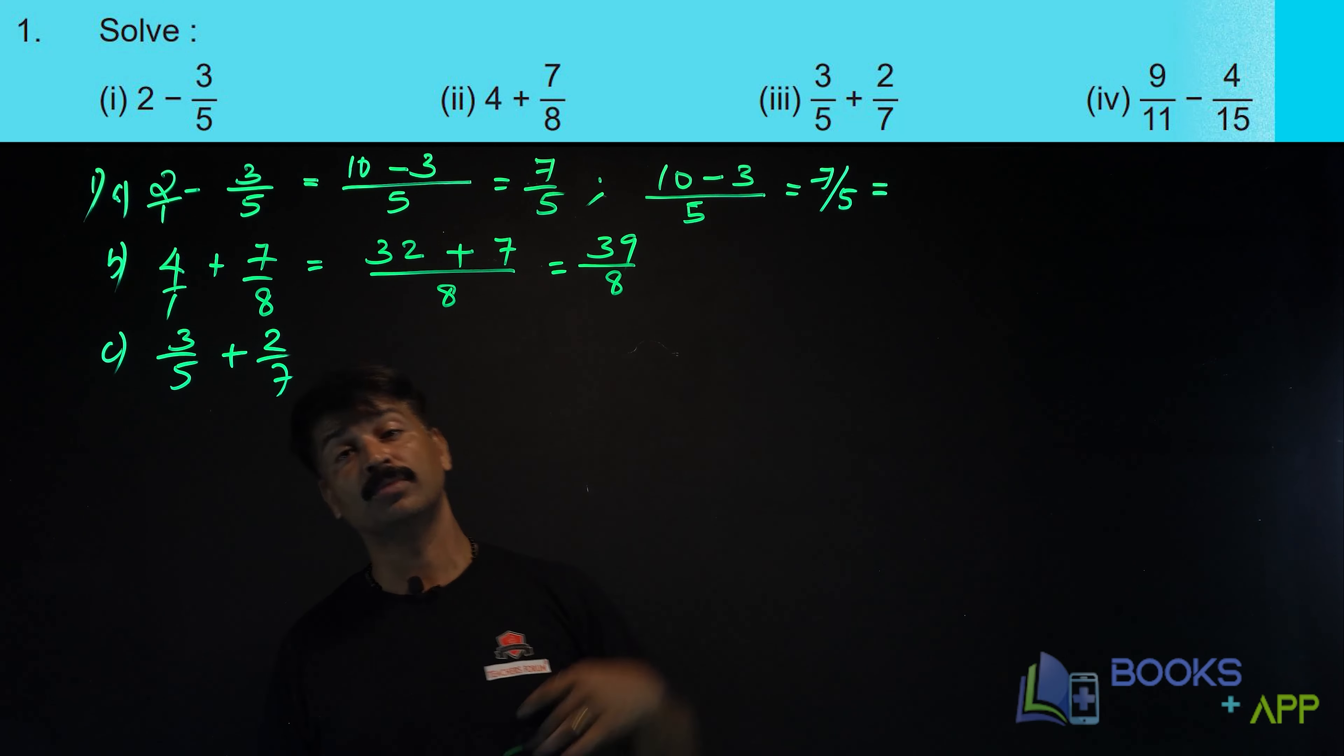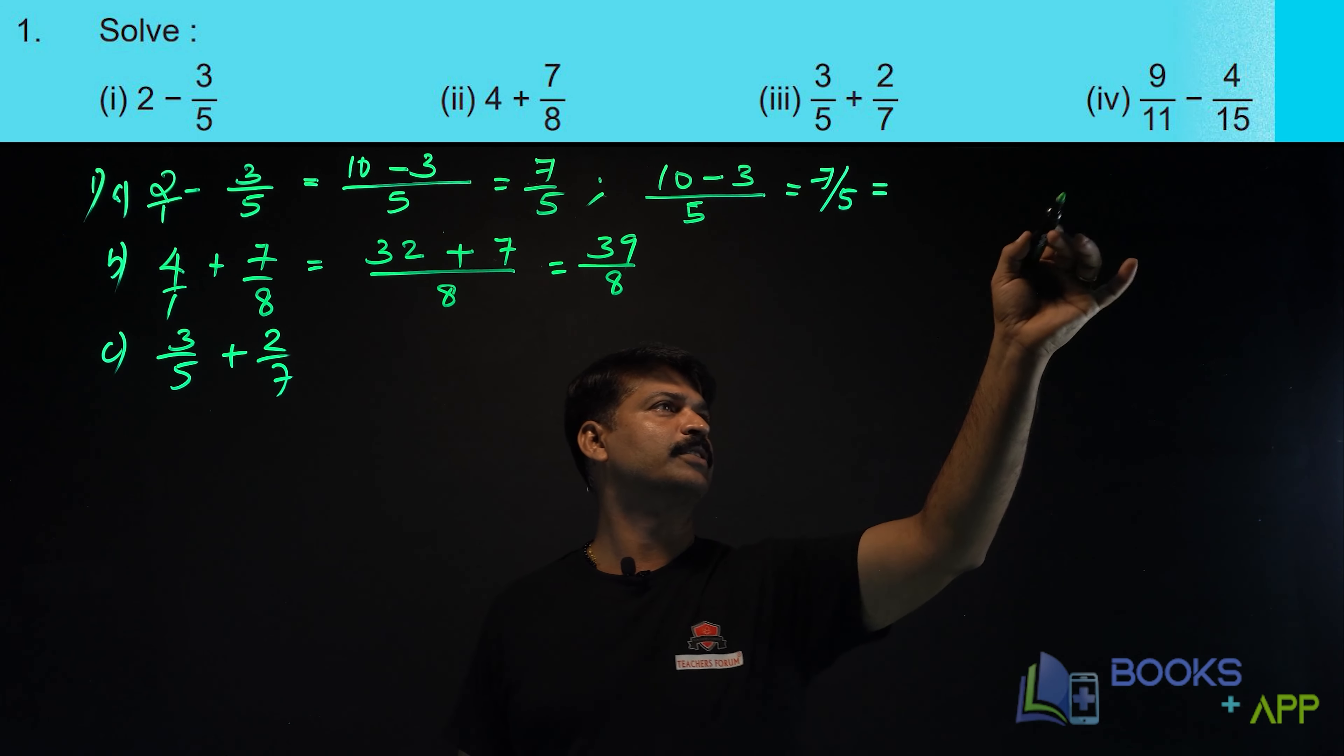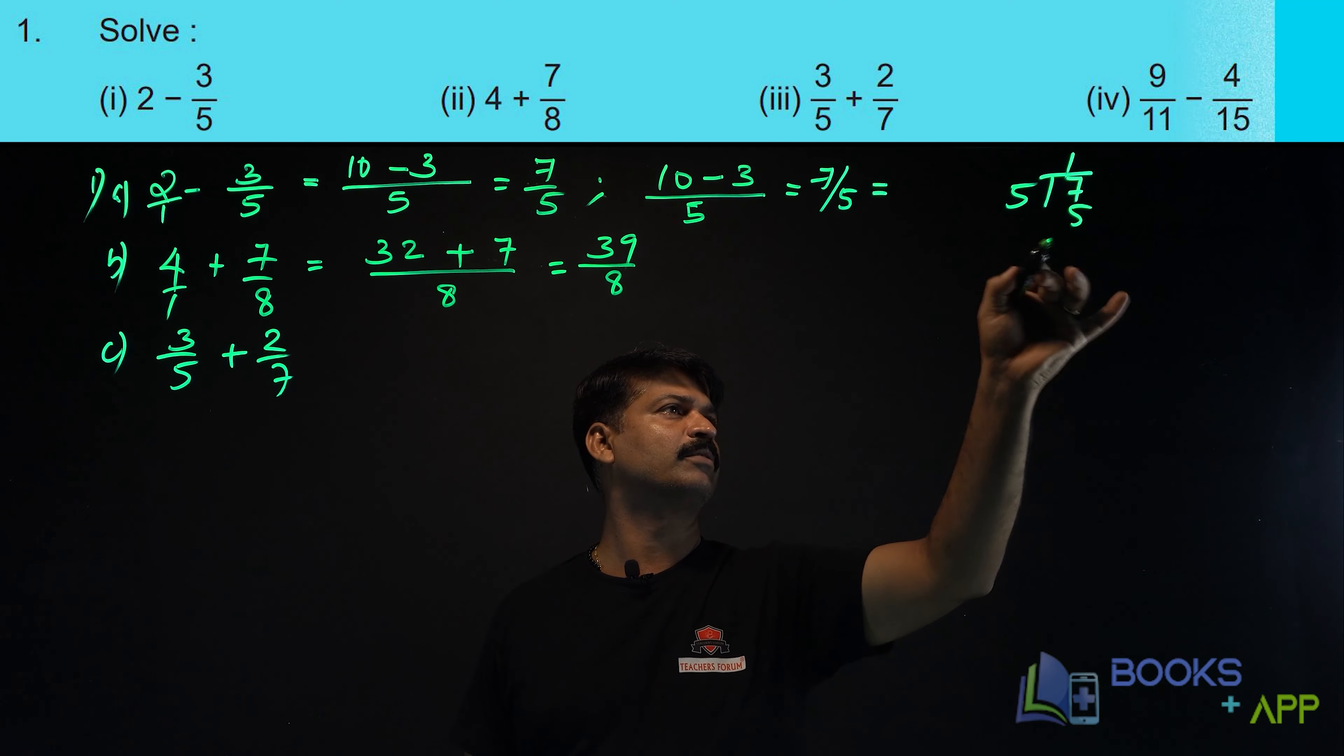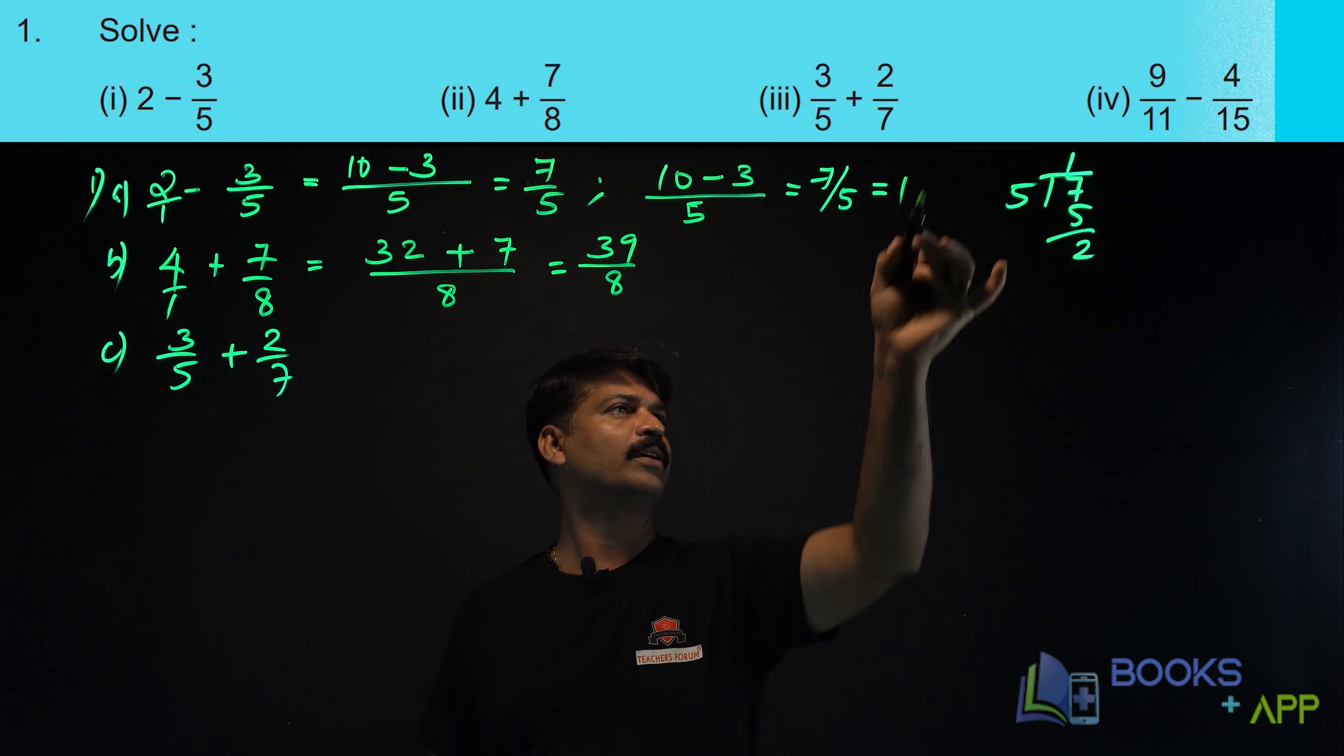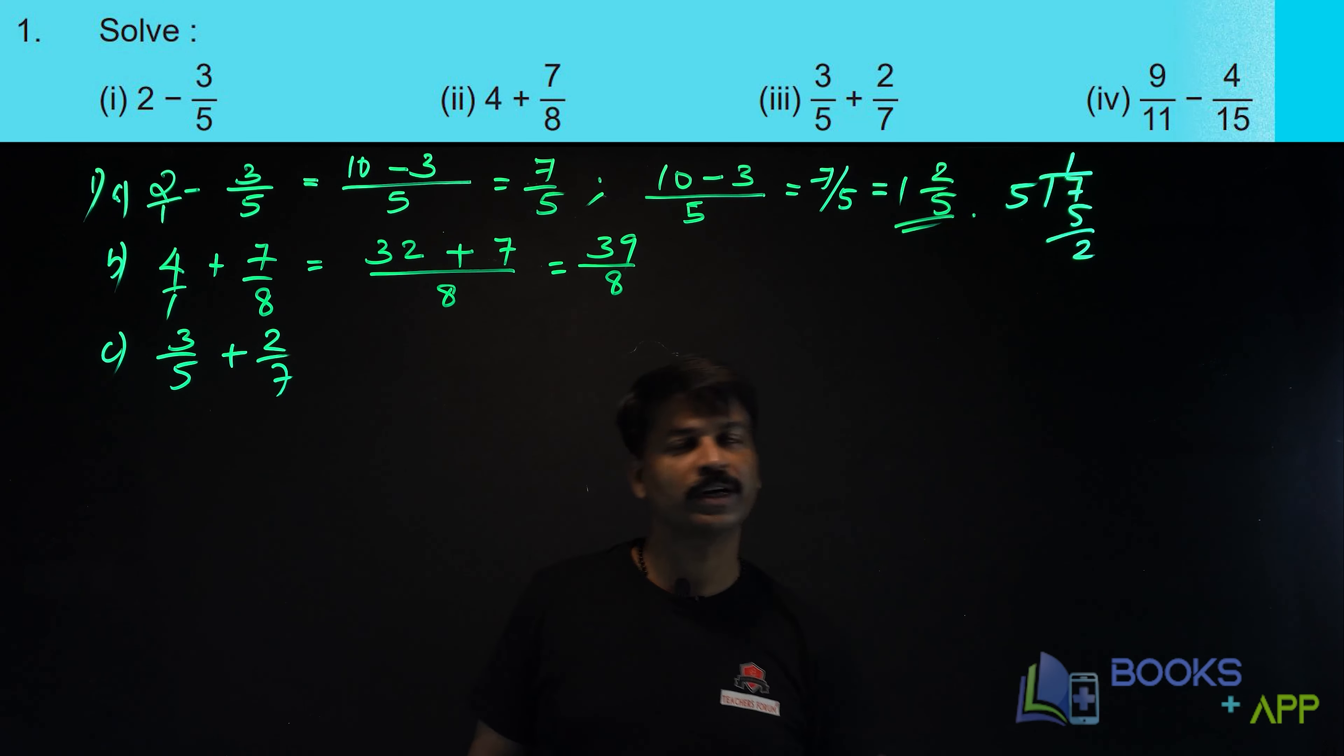If you want, you can convert this into mixed fraction. 7 by 5. What is 7 by 5? Let us solve it. 7 by 5 is 1, 5 is 5, remainder is 2. What is the answer? 1, 2 by 5. So, it can be converted into mixed fraction. 1, 2 by 5.